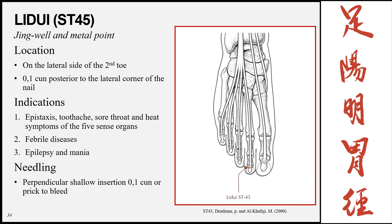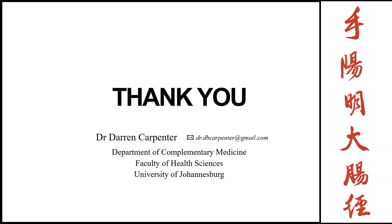The final point is Lidui, Stomach 45, the jing-well and metal point of the meridian, on the lateral side of the second toe, 0.1 cun posterior to the lateral corner of the nail. Indications: epistaxis, toothache, sore throat, heat symptoms of the five sense organs, febrile diseases, epilepsy, and mania. Insertion is perpendicular shallow, 0.1 cun, or the point may be pricked to cause bleeding. This concludes the Stomach meridian; next is the Spleen meridian.